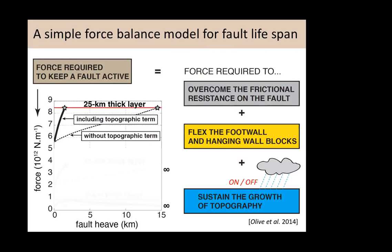Including all three terms, if I now remove all the topography — completely level it, fill the basins, cut off the mountains — I strongly slow down the increase in force with increasing fault offset, and end up reaching the threshold for breaking the next fault much later. In a 25-kilometer thick perfectly elastic layer, removing topography has a moderate effect. In a 15-kilometer thick weaker layer, the topographic term represents a greater relative share of the total dissipation, so removing it has a greater influence — that's why you can go from a fault that grows a couple kilometers and dies to a fault that can live forever.